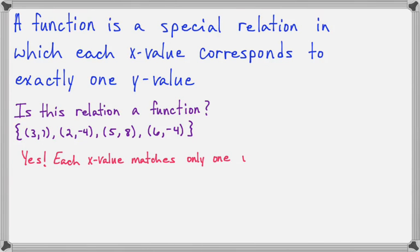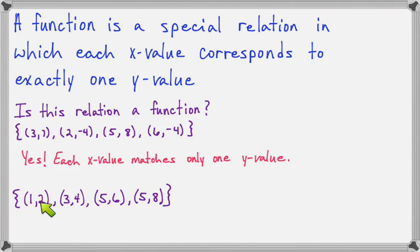Each x value matches only one y value. Now look at this relation. The 1 corresponds to 2, 3 corresponds to 4, 5 corresponds to 6, but 5 also corresponds to 8. So this cannot be a function because the x value creates two different y values. X equals 5 corresponds to both y equals 6 and y equals 8.